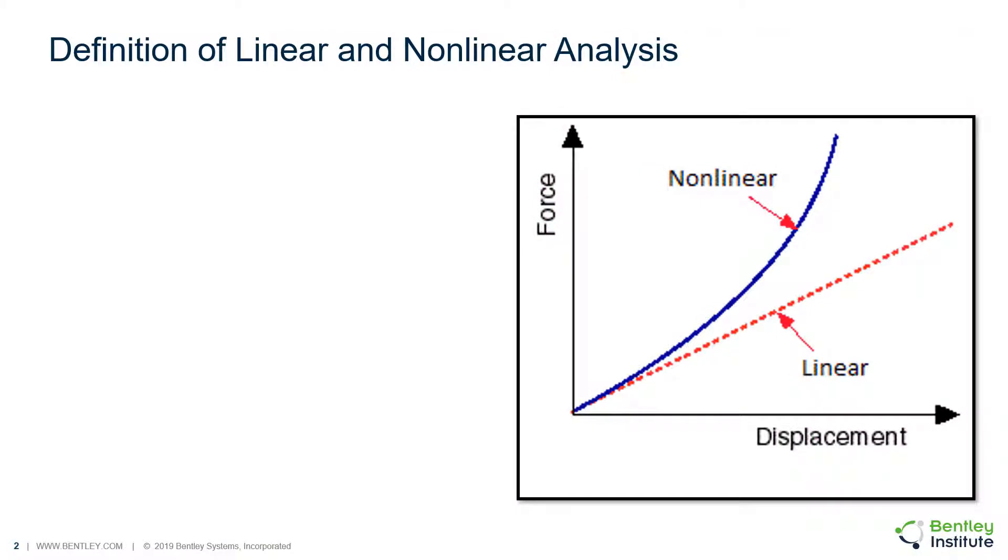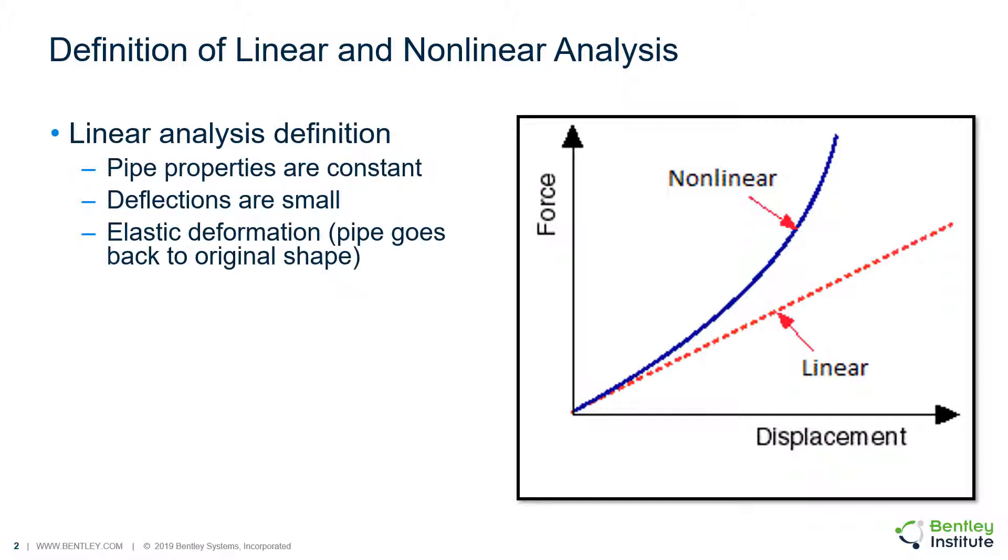There are two different kinds of analyses: linear and nonlinear. Characteristics of a linear analysis are the pipe properties are constant, the deflections are small, and there is elastic deformation, which means the pipe goes back to its original shape when it's unloaded.